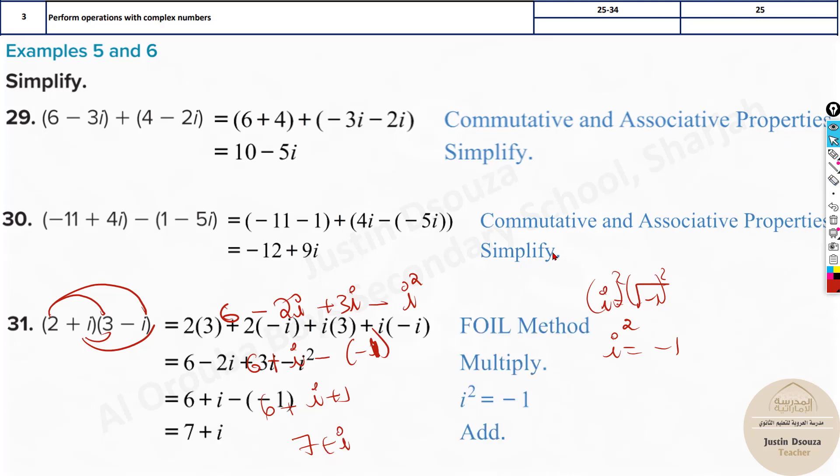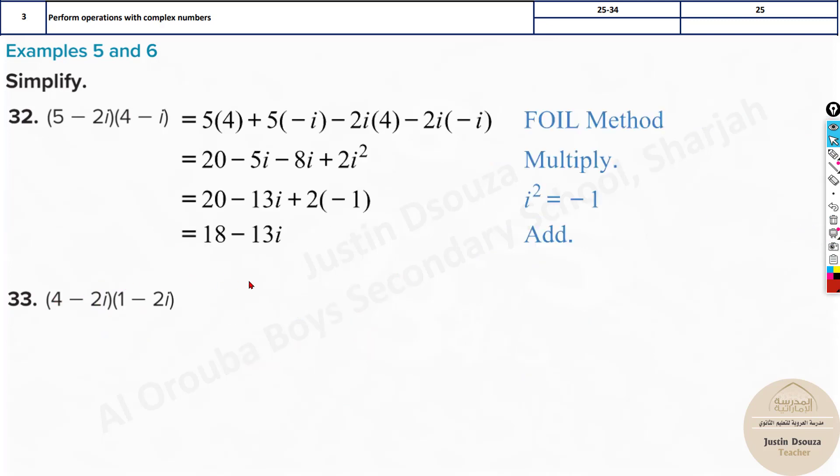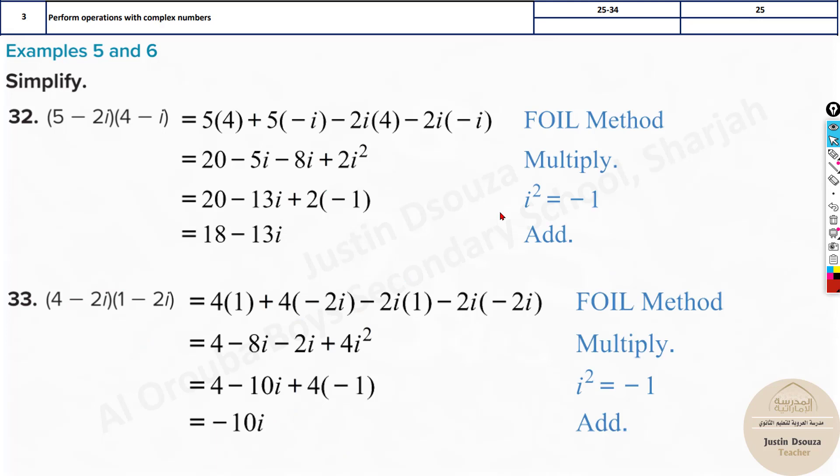Just by FOIL method, simplification, and then solving for it. This is plus i. So if it's multiplication, very easy, just do the FOIL method and you can see the answers. Do it by yourself and then check for the answers over here.